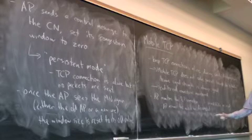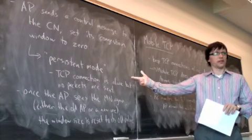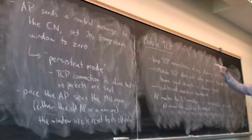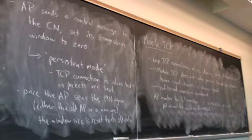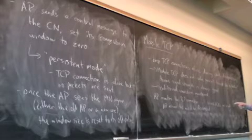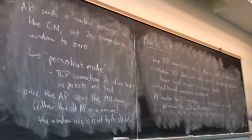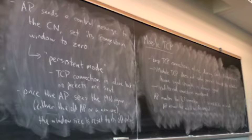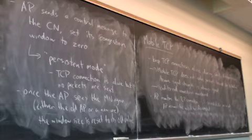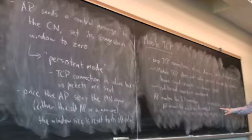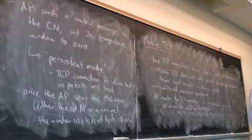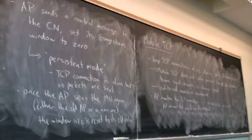You'll also notice that mobile TCP is compatible with snooping TCP — you could run mobile TCP at the same time as snooping TCP. Basically, if intermittent packets are dropped, they are replenished from the snooping TCP buffer. But if lots of packets are dropped in a row, mobile TCP takes over, sets persistent mode, and waits for the connection to come back.